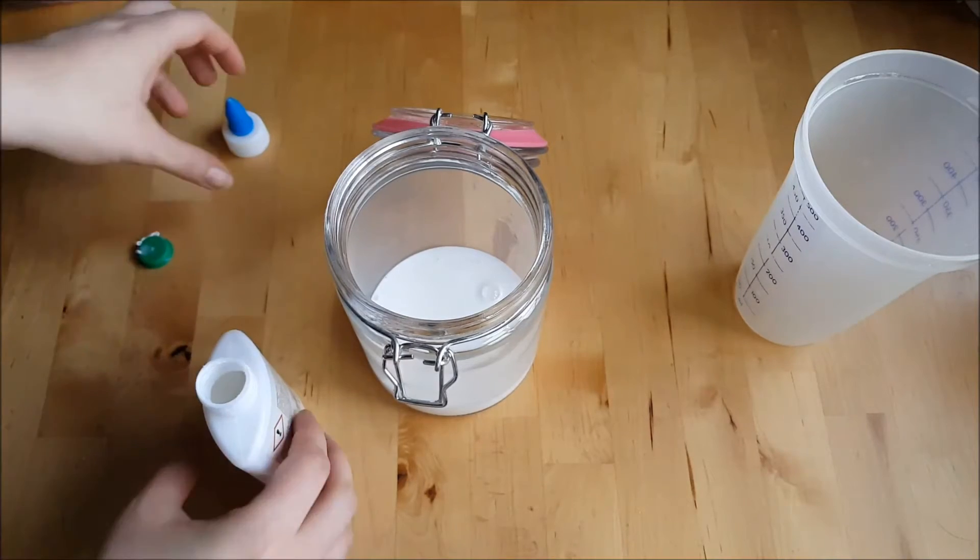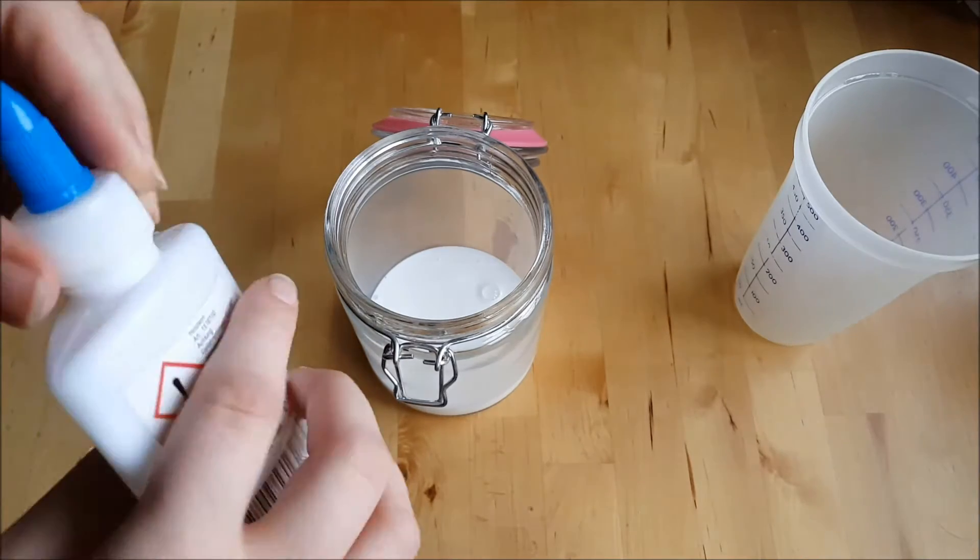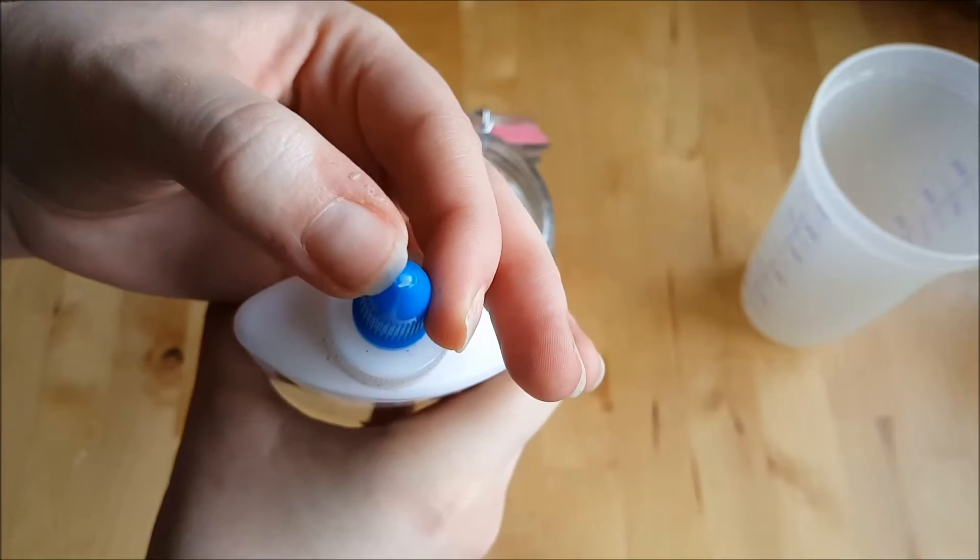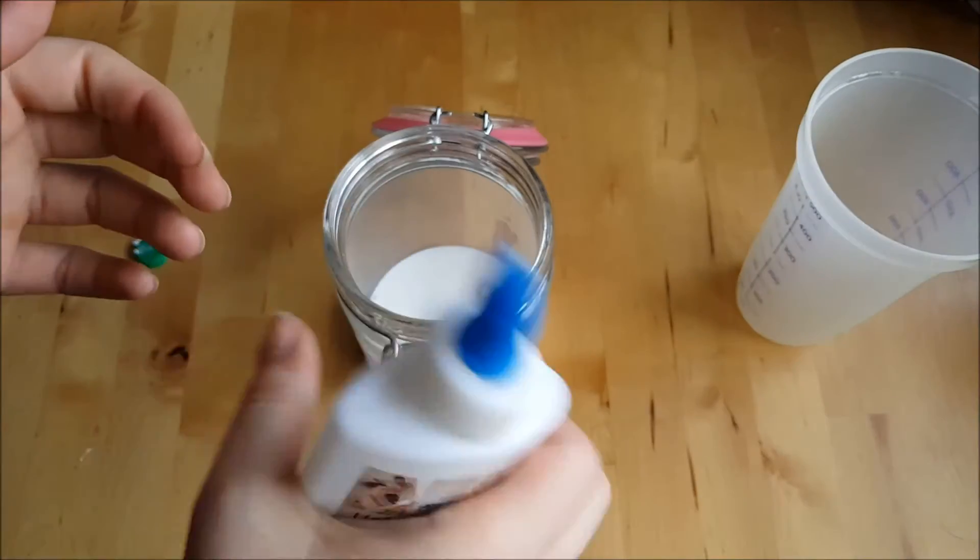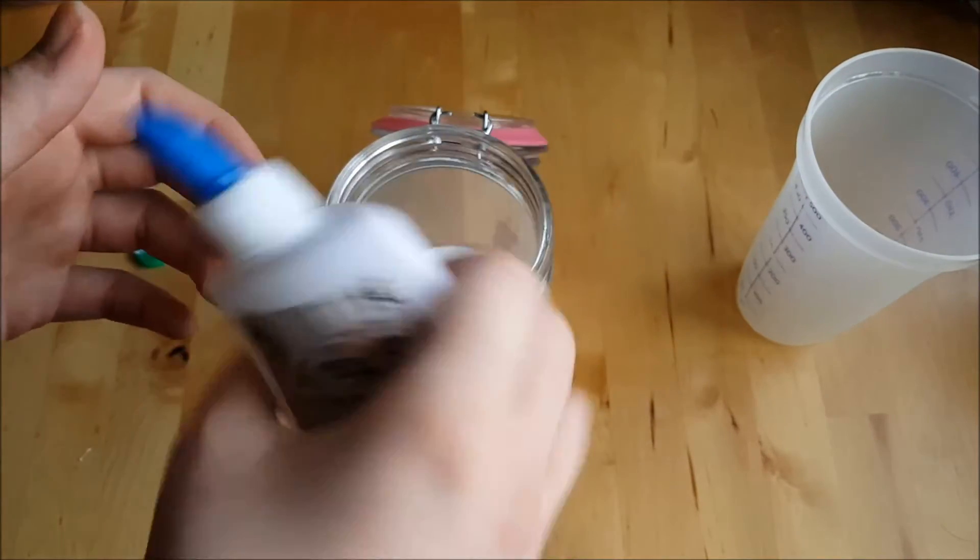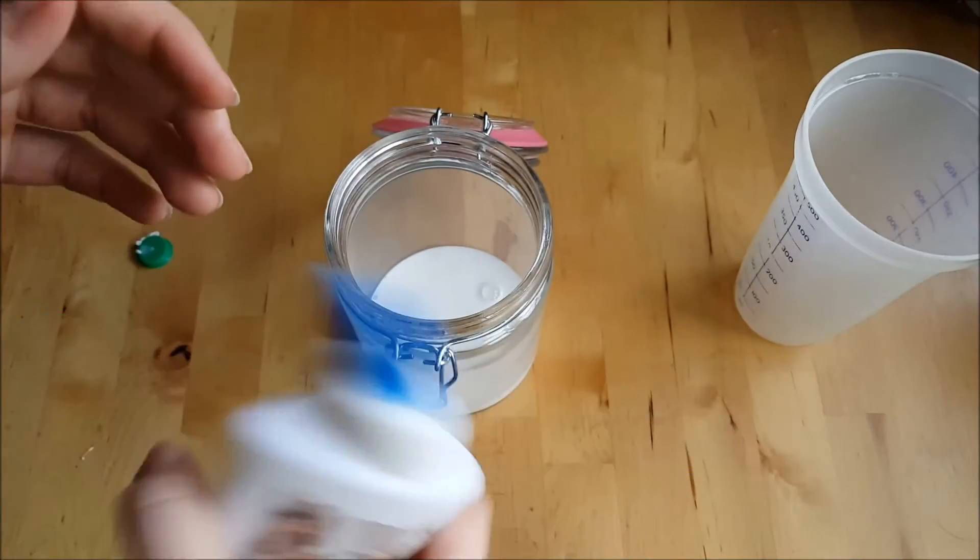To get all the glue out of the bottle I build a small funnel out of paper and pour the water into the glue bottle. Make sure that the bottle is closed before you start shaking. Then you just need to shake a bit to get all the glue out.